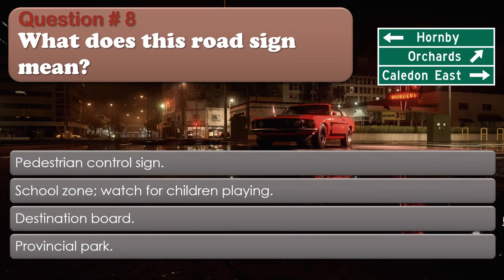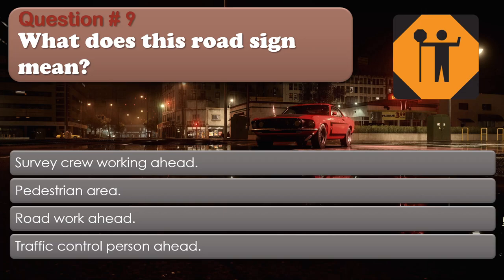Question number 8: What does this road sign mean? Options: Pedestrian control sign. School zone. Watch for children playing. Destination board. Provincial park. The correct answer is Destination board. Question number 9: What does this road sign mean? Options: Survey crew working ahead. Pedestrian area. Road work ahead. Traffic control person ahead. The correct answer is Traffic control person ahead.